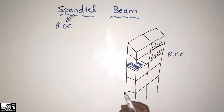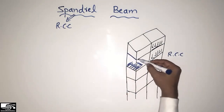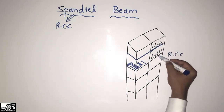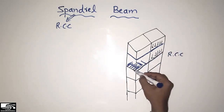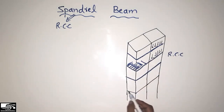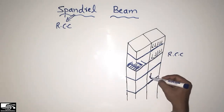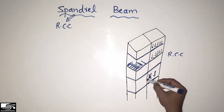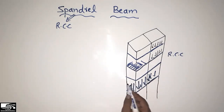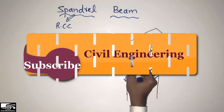To increase the stiffness of the building, we provide beams through the periphery of the structure and through the outside perimeter of the structure. These beams are known as the spandrel beam — they increase the stiffness of the overall structure and are quite useful to take the load of the wall. When the wall load is coming, these beams are able to take the wall load easily and transfer it into the column.